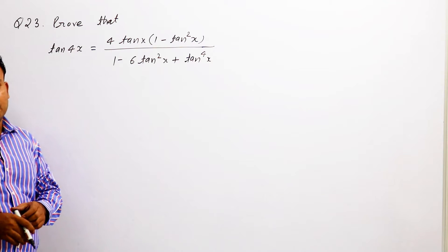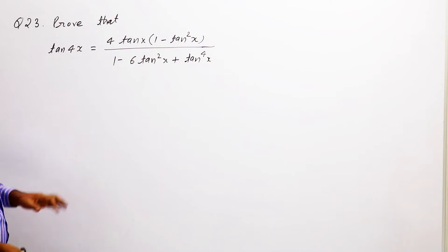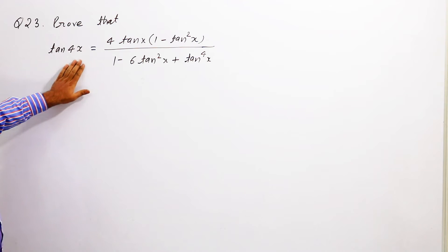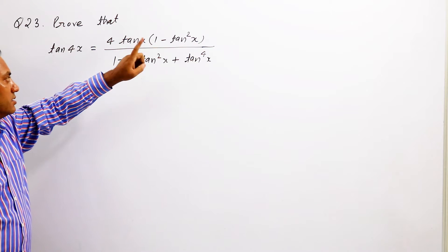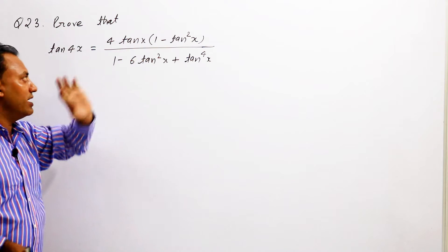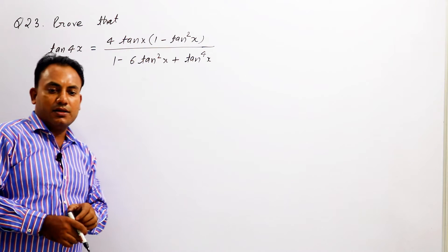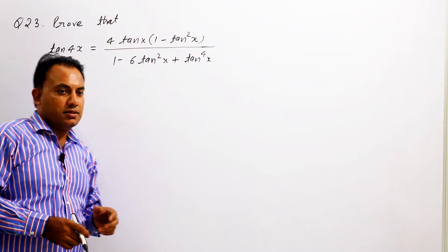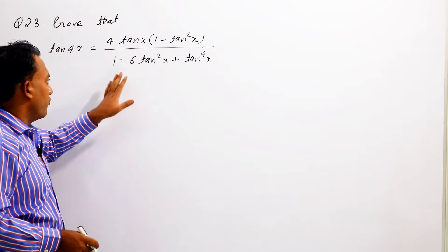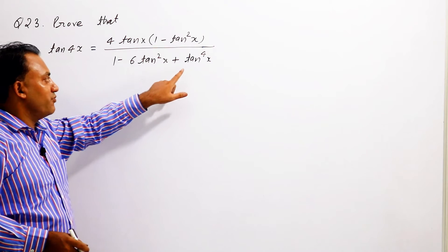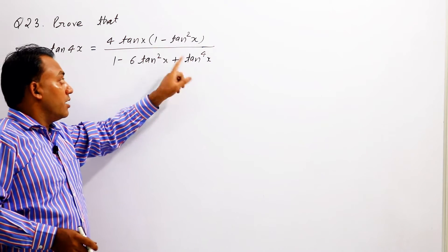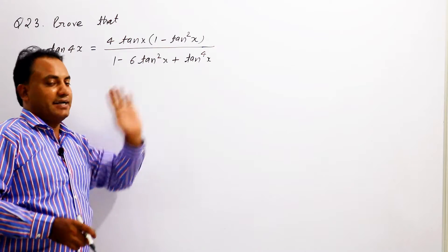Question number 23. Prove that tan 4x is equal to 4 tan x (1 minus tan square x) upon 1 minus 6 tan square x plus tan to the power 4 x.